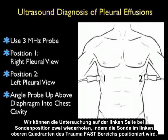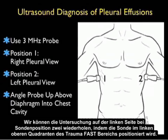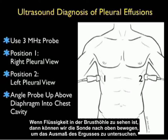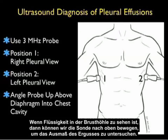We can repeat the exam on the left side as shown in probe position 2, placing the probe into the left upper quadrant trauma fast view. Look first into the area above the spleen and below the diaphragm, and then angle the probe upwards into the left thoracic cavity. If fluid is seen within the thoracic cavity, we can then move the probe upwards to investigate the extent of the effusion.